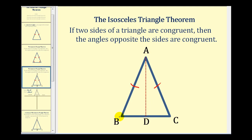So now to prove that angle B is congruent to angle C, we're going to prove that these two smaller triangles are congruent, and therefore corresponding parts would also be congruent. If this is an angle bisector, we know that angle BAD would be congruent to angle CAD, and the two small triangles would share side AD — AD is congruent to itself. So by side angle side, we can prove these two triangles are congruent, and therefore angle B would be congruent to angle C, proving the isosceles triangle theorem.